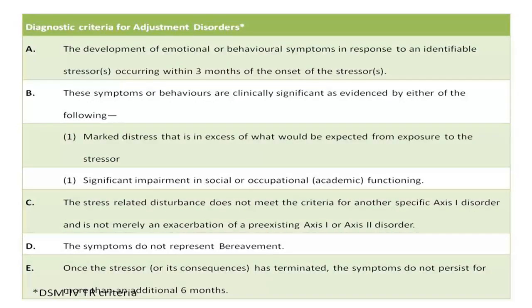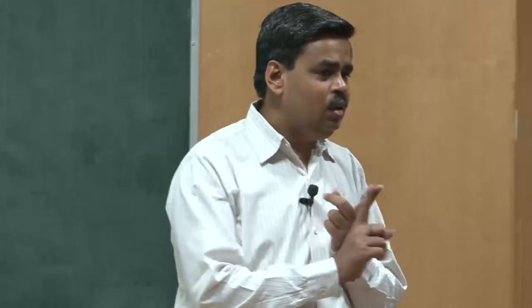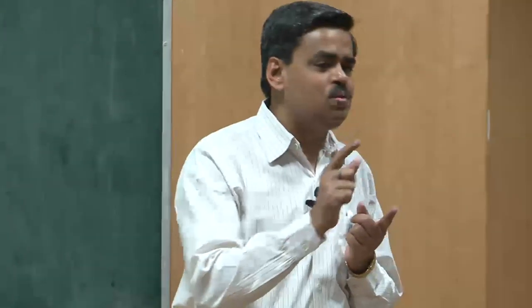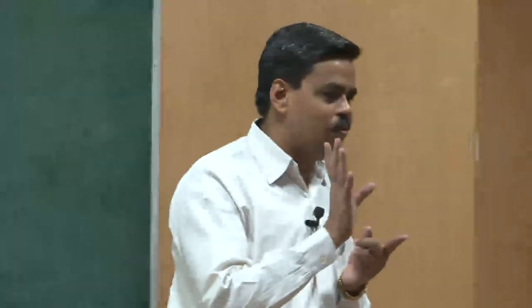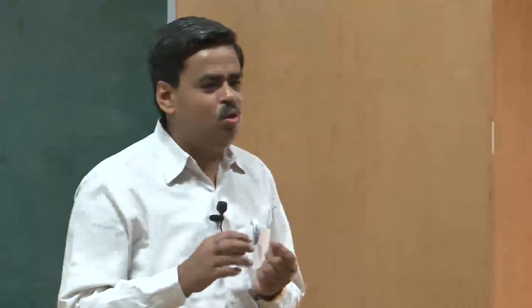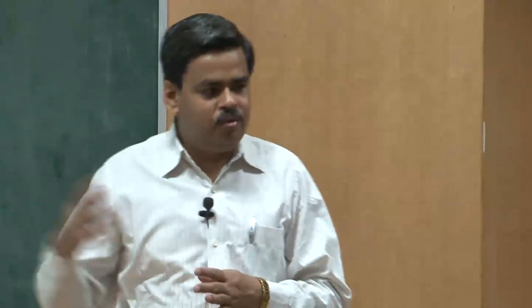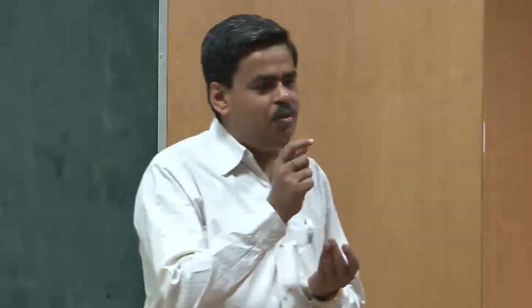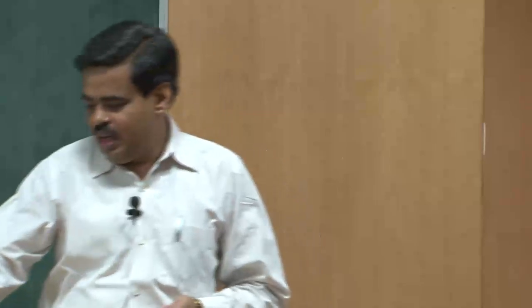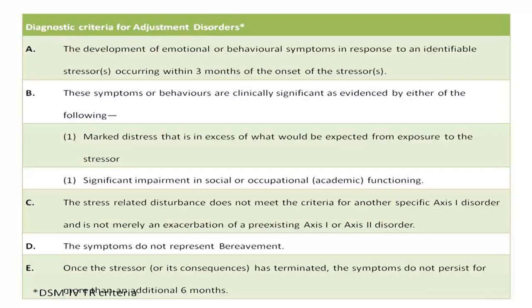With reference to adjustment disorder, the DSM says there should be development of emotional or behavioral symptoms in response to an identifiable stressor, occurring within three months of the onset of the stress. The stressor that has led to the problem should be identifiable — you cannot say 'I do not know why, but I feel this.' Also, from the time of onset, the symptoms should have started occurring within the first three months.